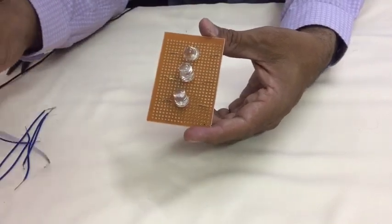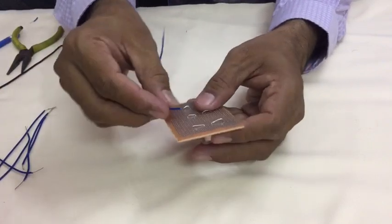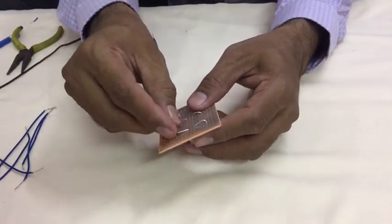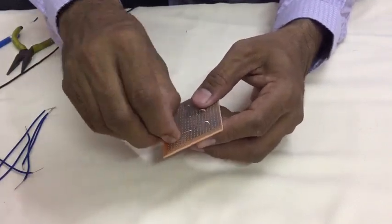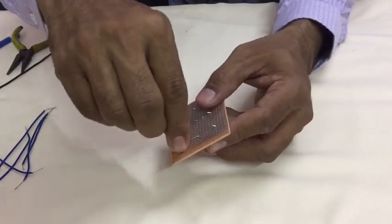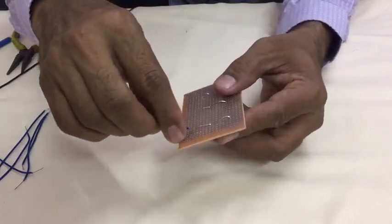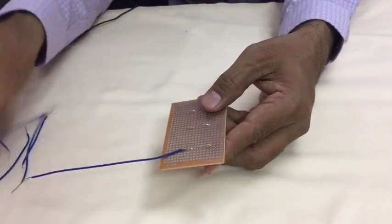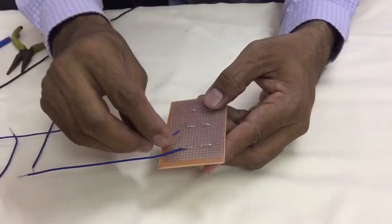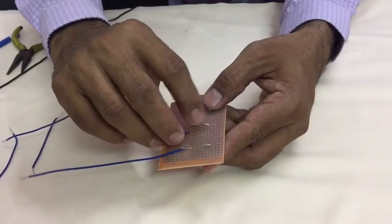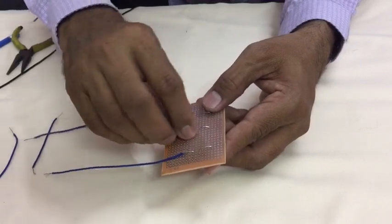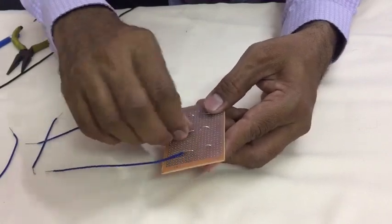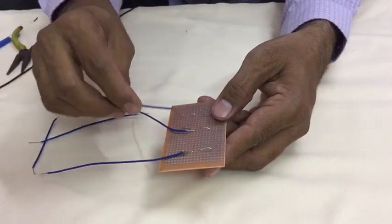Now take one wire, connect one wire to one terminal of LED. It is very easy, simply you have to insert and twist. Similarly, for the second also, third also.